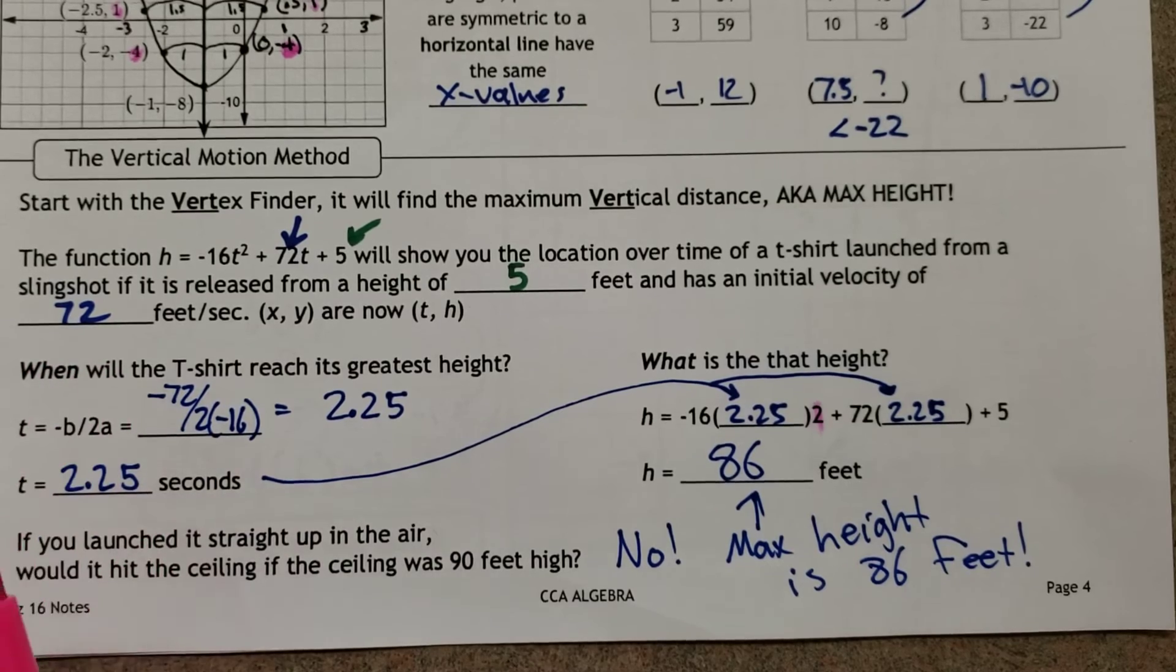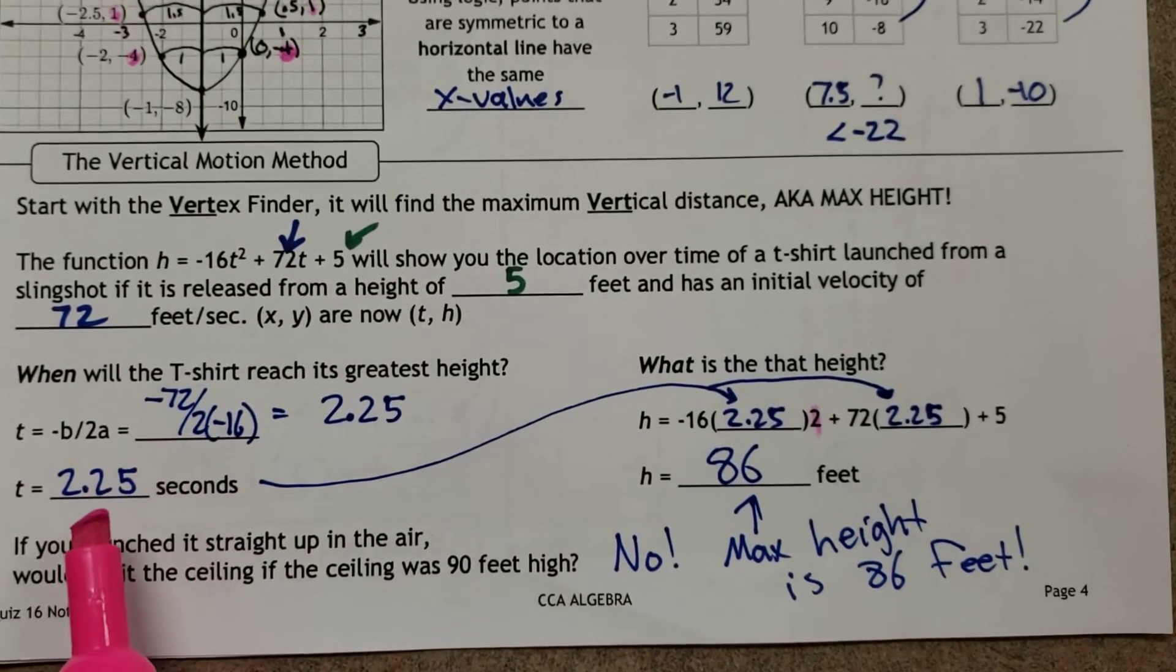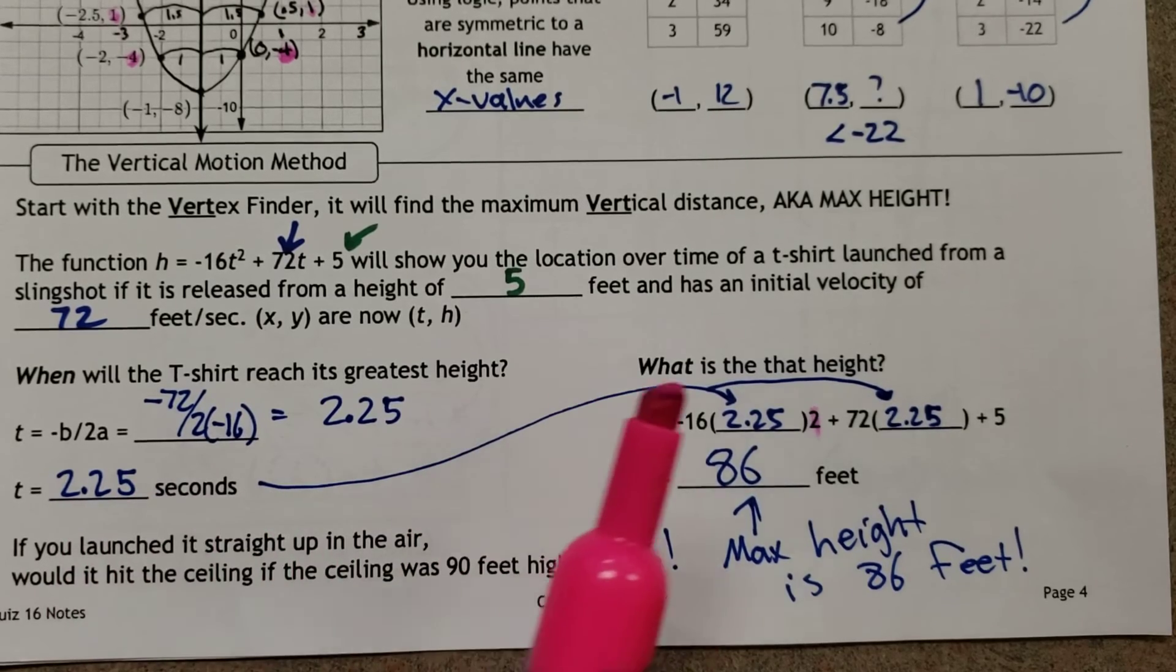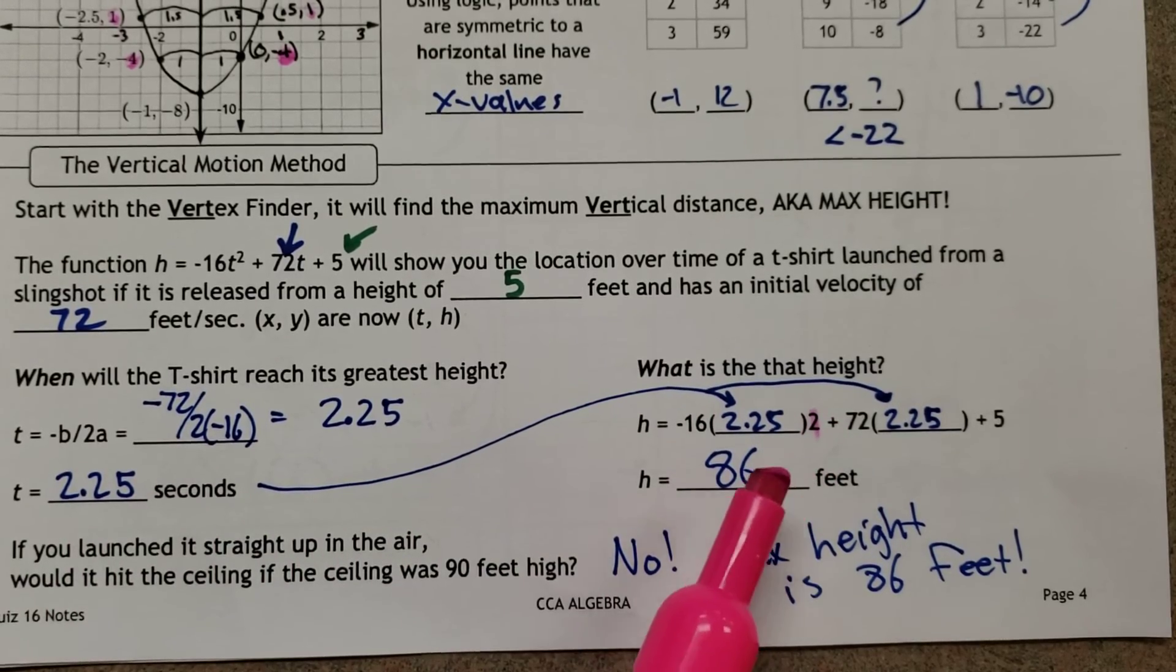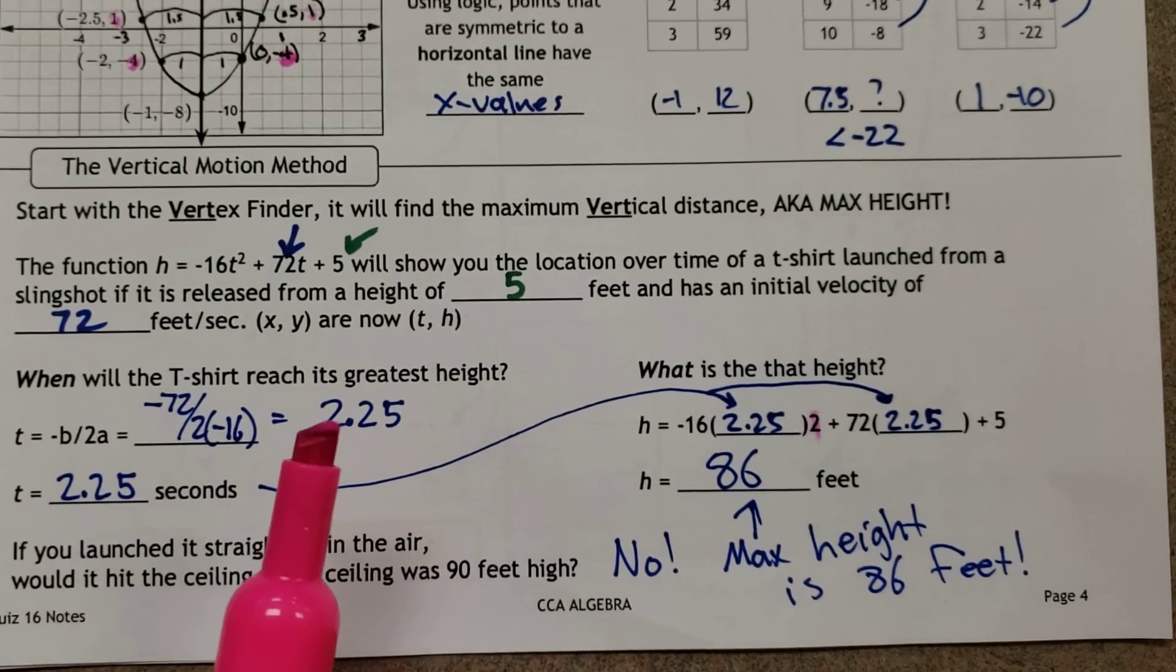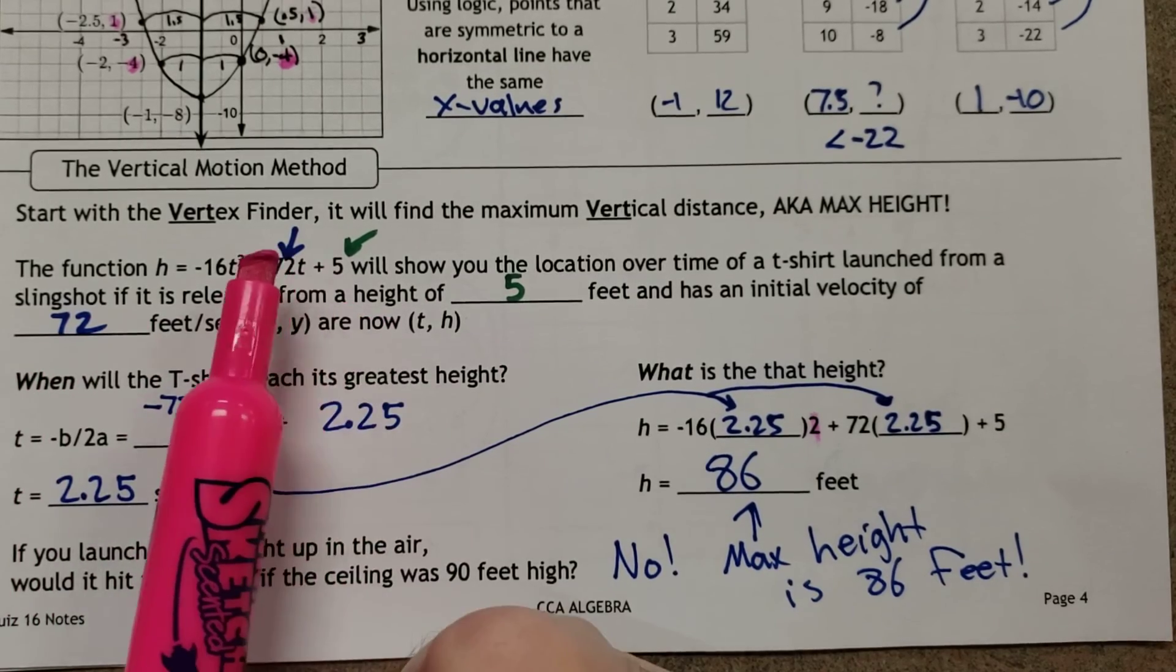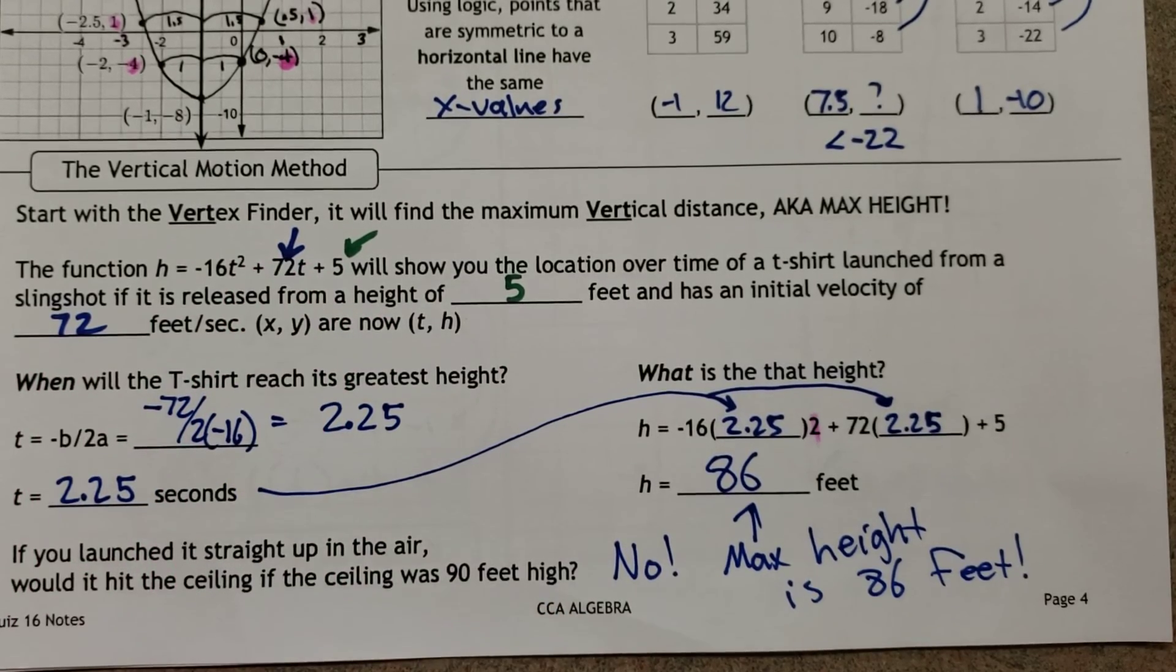All right, that's about it for gravity functions. The biggest thing to take away, friends, is -b/2a gives you the seconds. Put the seconds back into the equation, and then it'll give you the feet. So even though it asks for the feet first, you actually need to figure out the when first. And then initial height, initial velocity - all those fun numbers. These are the only two numbers you really need to worry about.